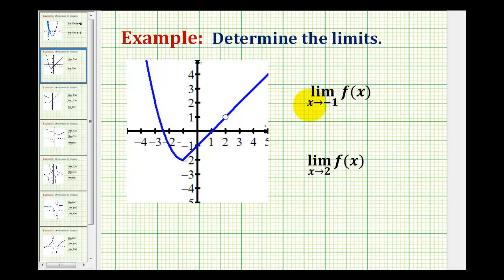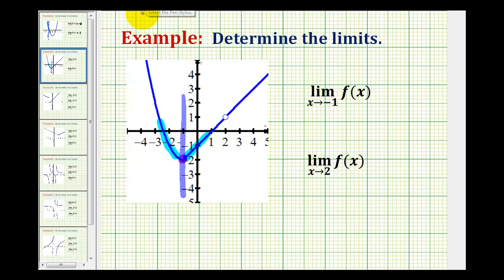Now let's take a look at two more limits using a different graph. Here we have the limit as x approaches negative 1 of f of x. Here's x equals negative 1, and we're approaching from the left side and the right side to determine if we're approaching the same function value. We can see we're approaching this point where the function value is negative 2 from both sides. Therefore, this limit is equal to negative 2. The function value is the y value.